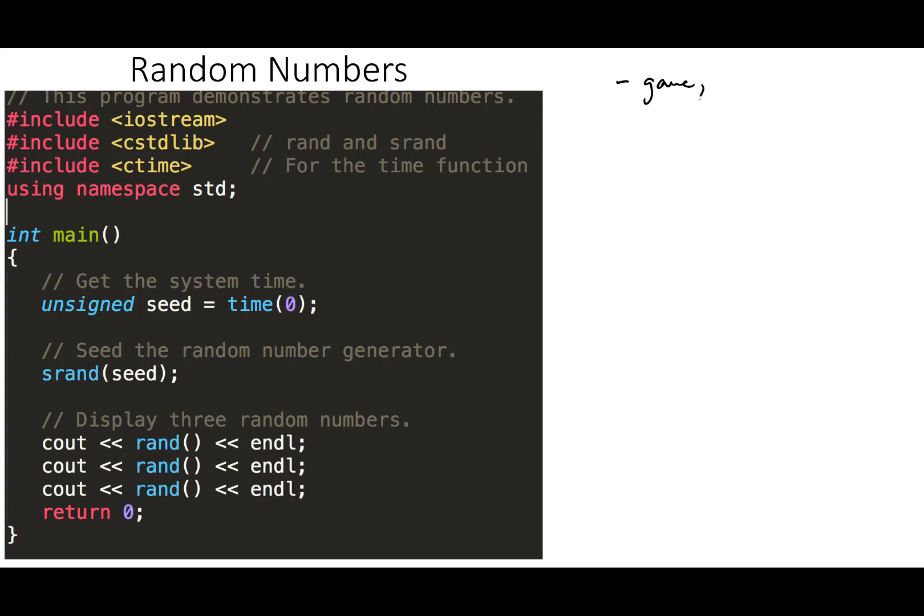Simulated data or programs - so let's say you're trying to simulate something, you might need to generate some random numbers to run your simulation. Statistical programs, you'll often need to generate random numbers. Computer security - with encryption you'll often be generating random numbers.